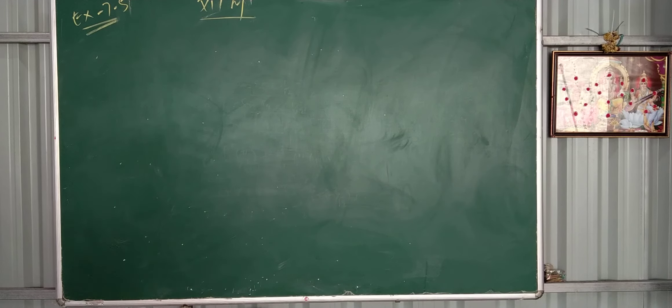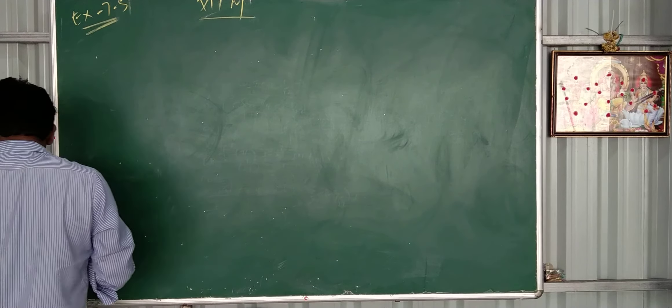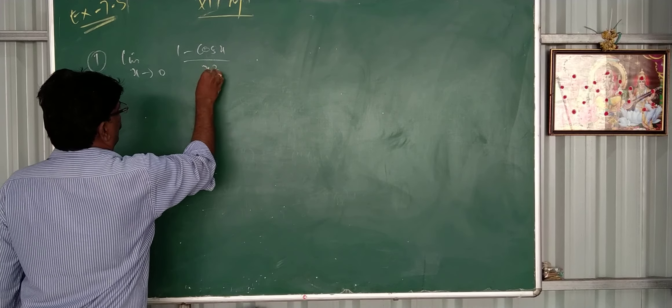So now Exercise 7.5, L'Hôpital rules. See, first sum: limit X tends to 0, (1 minus cos X) by X square, (1 minus cos X) by X square.